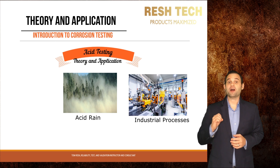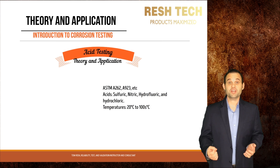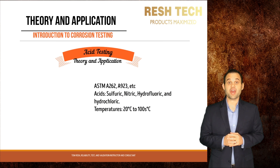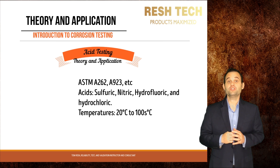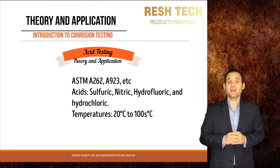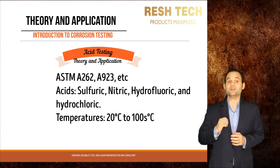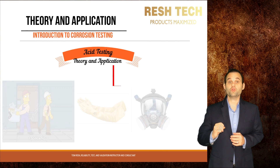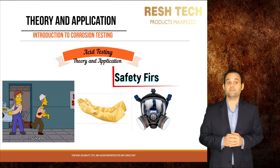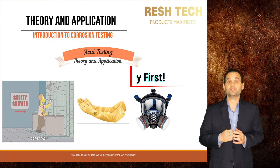Acid testing is used to simulate environments such as acid rain and exposure to chemicals in an industrial environment. Test standards used for acid testing include ASTM test standards and many more. Acids used for testing include nitric, sulfuric, hydrofluoric, and hydrochloric acids. Temperature environments can range from 20 degrees Celsius all the way up to hundreds of degrees Celsius. Acids are really nasty stuff — to handle them safely, use appropriate PPE and handling procedures.